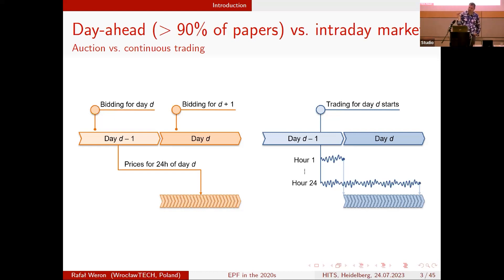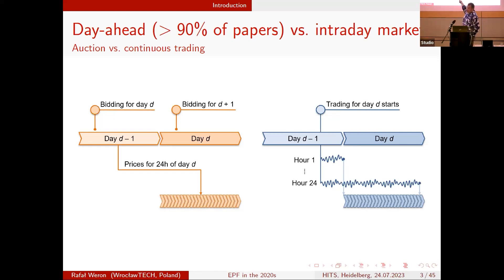For instance, the intraday continuous market shown in blue has continuous trading of products. You have an hourly product — delivery during a specific hour on day D — and you start trading in the afternoon of day D minus one, continuing until a few minutes before actual delivery. Different hours are different contracts because electricity cannot be stored easily; when you store it you lose a lot of energy, so you want to produce electricity when it's needed.